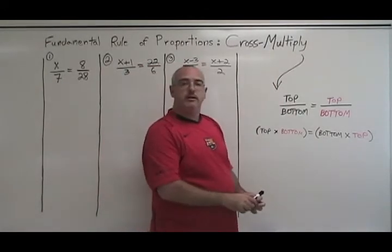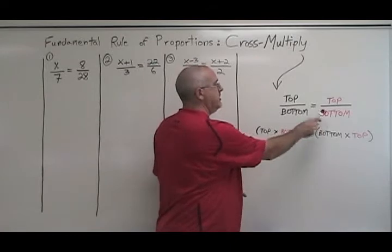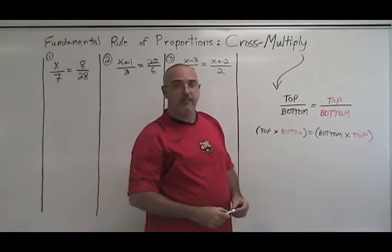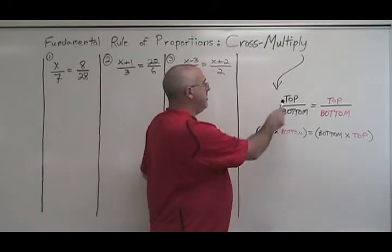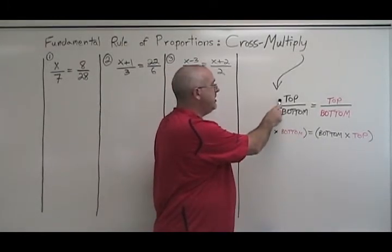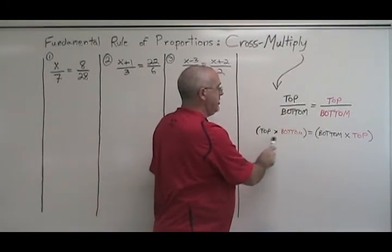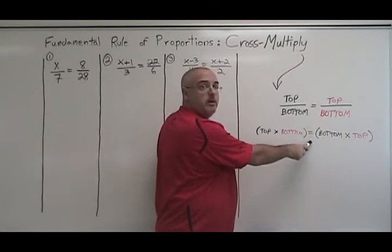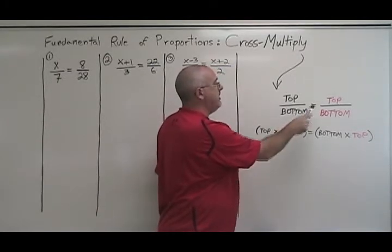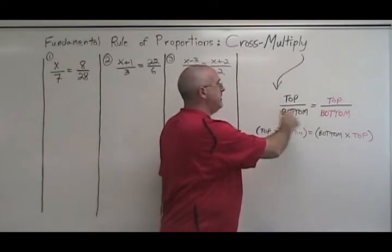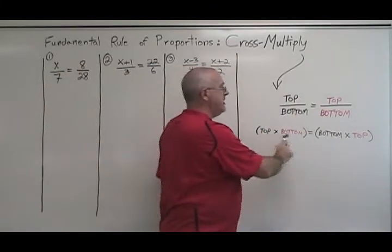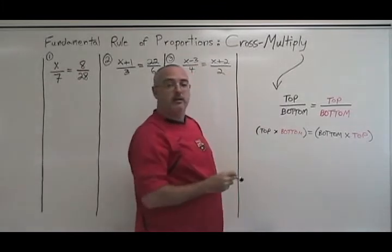A proportion is always formed from two fractions with an equal sign in between them. What you do to apply cross multiplication is you multiply the top of the left fraction by the bottom of the right fraction. Then you put your equal sign and you multiply the bottom of the left times the top of the right. This converts your equation which has fractions into an equation that only has one line and is easier to solve.